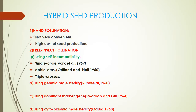Coming to hybrid seed production. Techniques include: hand pollination — not very convenient, high cost of seed production because of smaller seed size, and takes two years to complete. Second is free insect pollination using self-incompatibility for single cross, double cross, using GMS, using dominant marker gene, and using CMS.